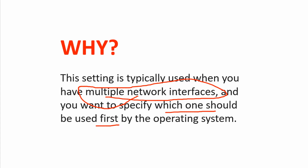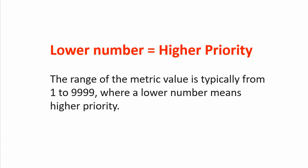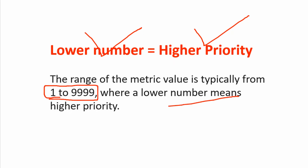For example, you have Wi-Fi and Ethernet, and Ethernet has the highest priority and then comes Wi-Fi and so on. You can change the interface metric and play around. The lower the interface metric number, the higher the priority. The range of the metric value is typically from 1 to 9999, where a lower number means a higher priority. As simple as that.